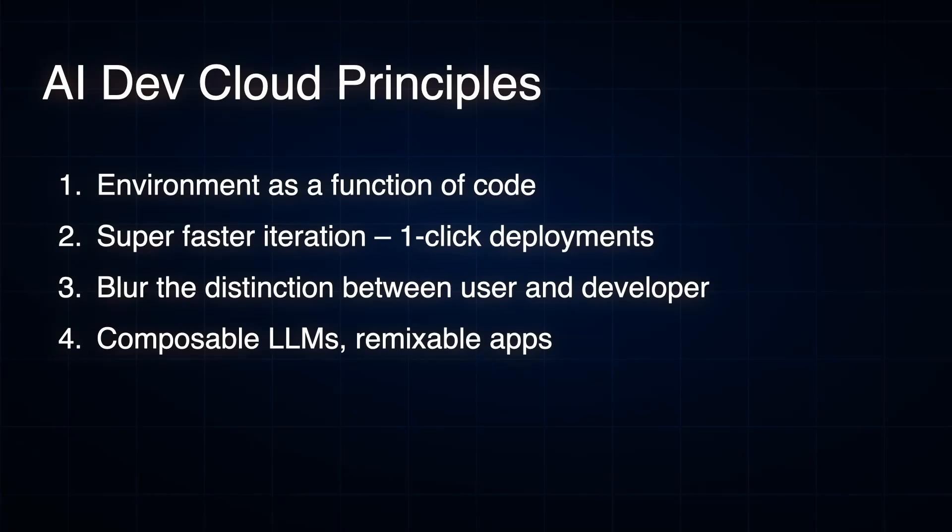The first principle is that environment should be a function of code. Part of the process that becomes the bottleneck is setting up the development environment, the staging environment, the deployment environment — all very laborious and hard to manage. But what if the environment is merely a function of your code? You generate code from ChatGPT or Bard or whatever, you copy and paste into an environment like Replit, and it just knows what needs to be done. It figures out what packages need to be there, what servers need to be spun up, all the configuration. You hit run, and the code runs.